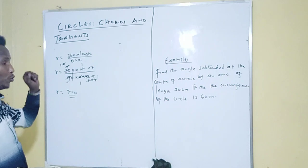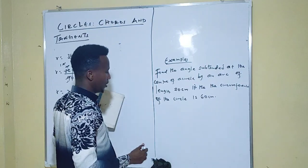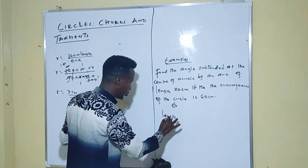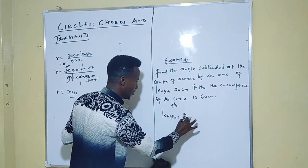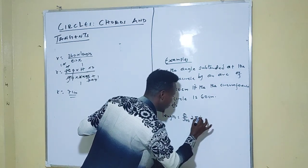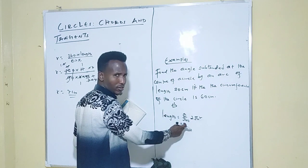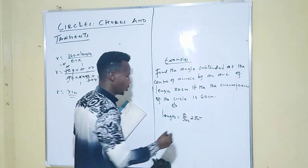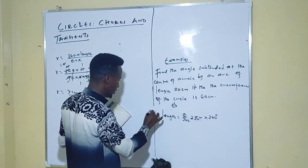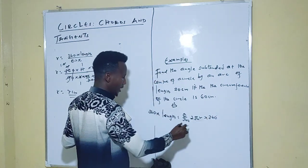The circumference we're talking about is 2πr. You have the length which is 20 and the circumference which is 60. We know that length equals theta over 360 times 2πr. This time our target is to get theta. To eliminate 360, multiply both sides of the equation by 360.